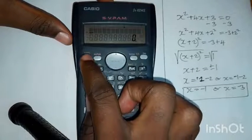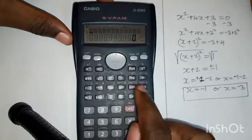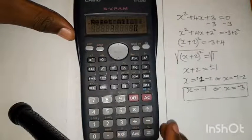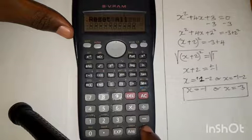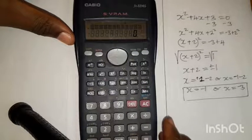First of all, press shift, then mod, then click 3. After pressing 3, then click equal sign twice.